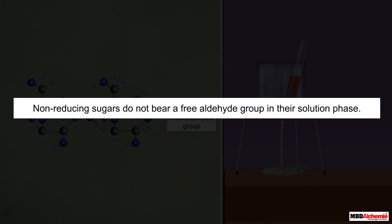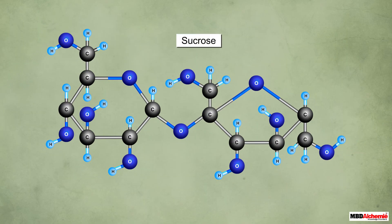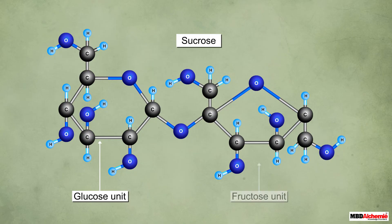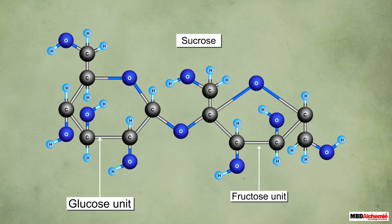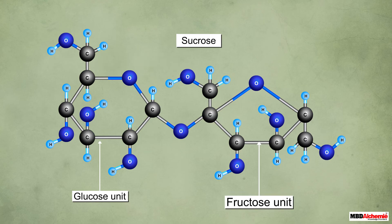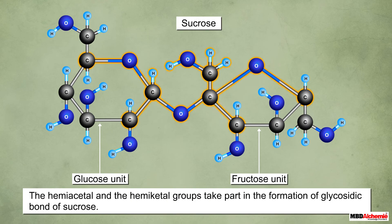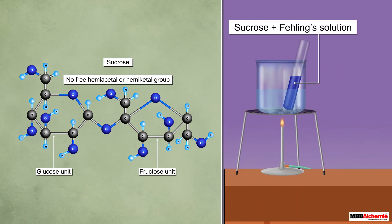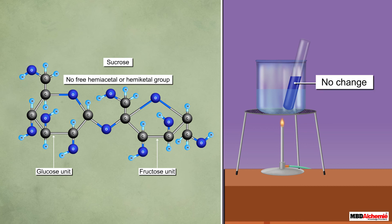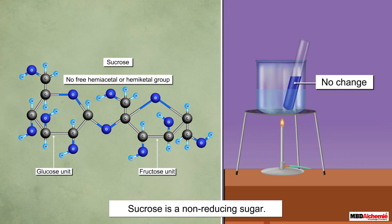In contrast to reducing sugars, non-reducing sugars do not bear a free aldehyde group in their solution phase. An example is sucrose, which is a disaccharide with one glucose unit and one fructose unit joined together through a glycosidic bond. The glucose unit has one hemiacetal group and the fructose unit has one hemiacetal group; both hemiacetal groups take part in the formation of the glycosidic bond of sucrose. This way, there is no free hemiacetal group in the cyclic structure of sucrose. Thus in the solution phase, the ring structure does not open and there is no free aldehyde group — that is why sucrose is a non-reducing sugar.